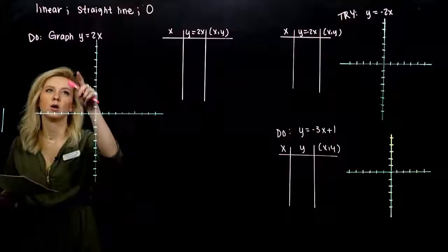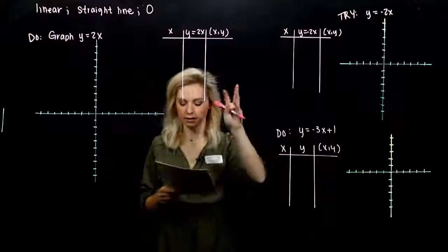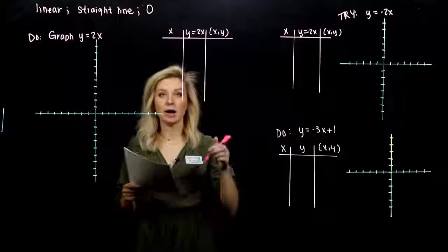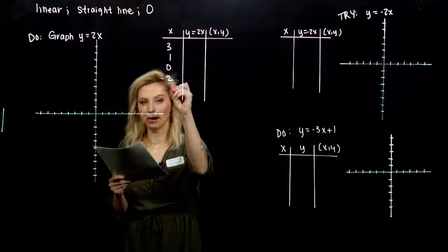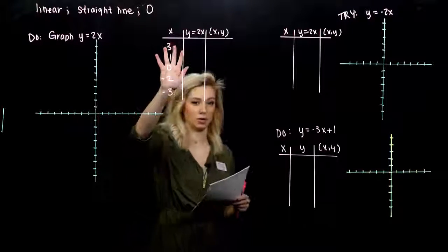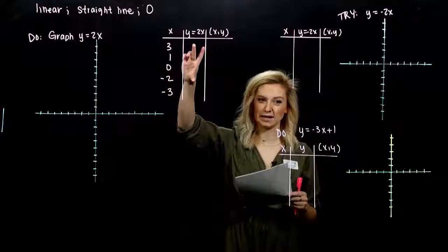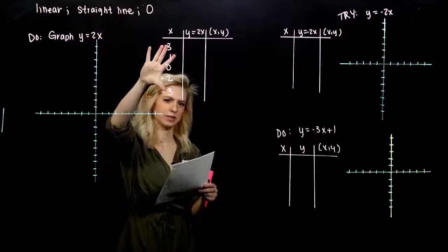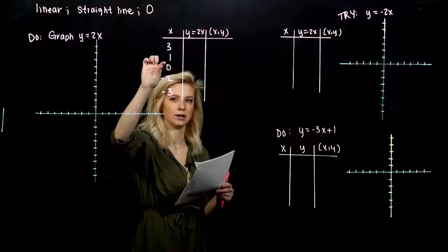The first thing we want to graph is y equals 2x. We're going to plot points, then connect the dots to get a picture of what this looks like. I'm going to plug in 3, 1, 0, minus 2, and minus 3 for x. x is the independent variable, so you can choose whichever values you want. y is dependent on what we're plugging in for x.